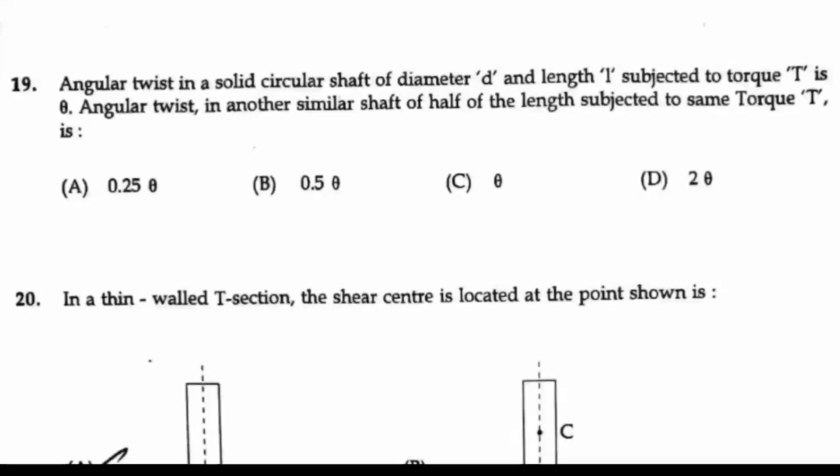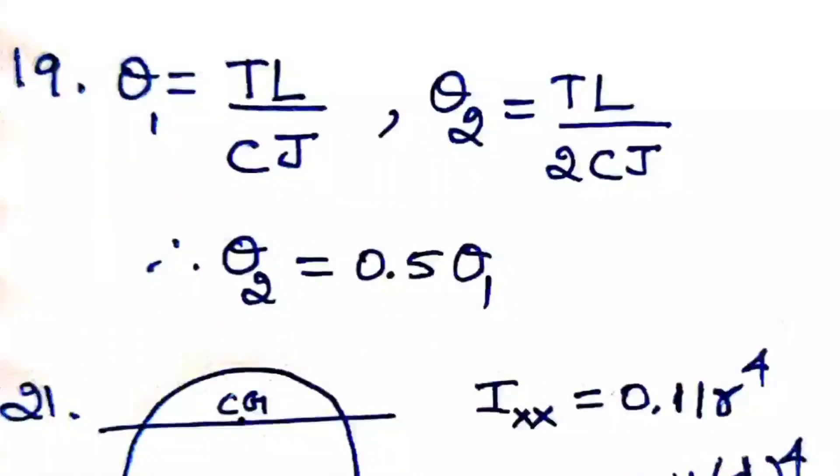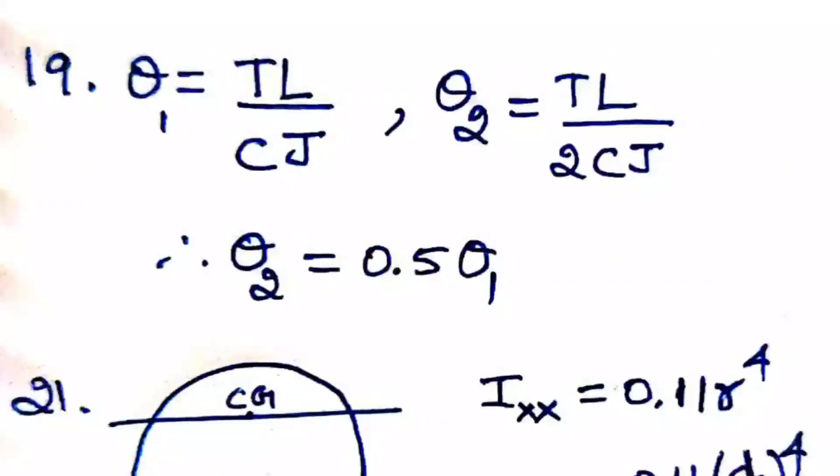The formula for θ is TL/(CJ), where T is the torsion value and L is the length. These two are enough for us because they have not given anything about C and J for the two cases, so we can keep the CJ value the same for both. For θ₂,